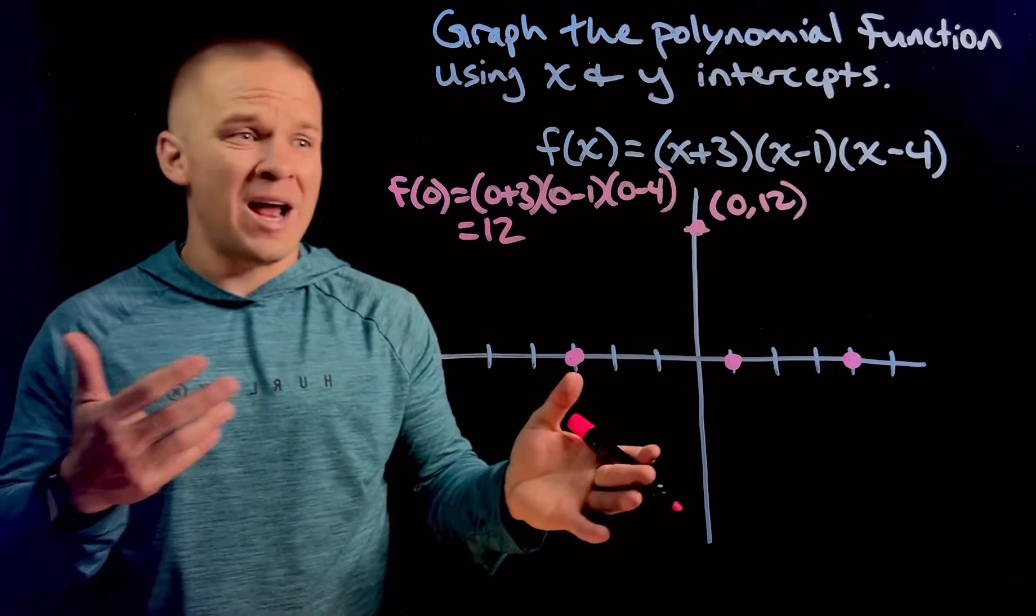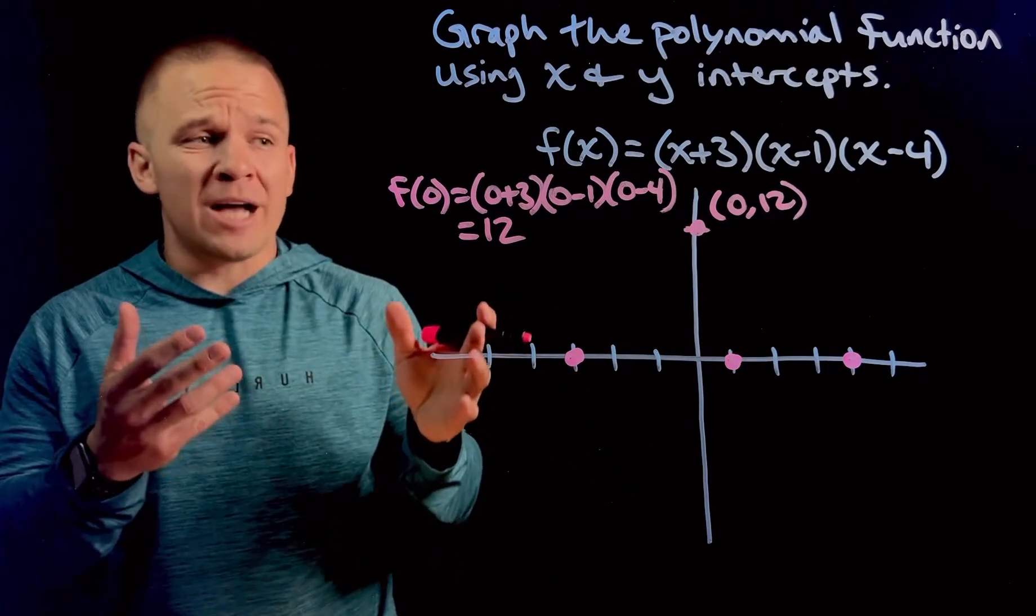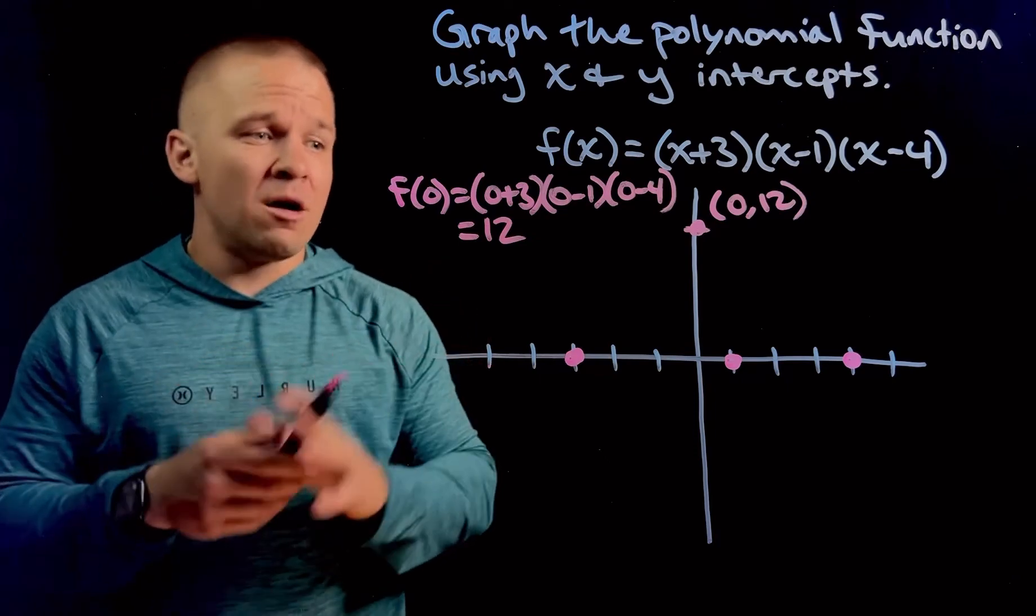So we'll go ahead and label that as zero comma twelve. Woo! We got everything, man. Now the next part is, we got to know what the heck this graph even looks like. Okay, so here's what's about to happen.